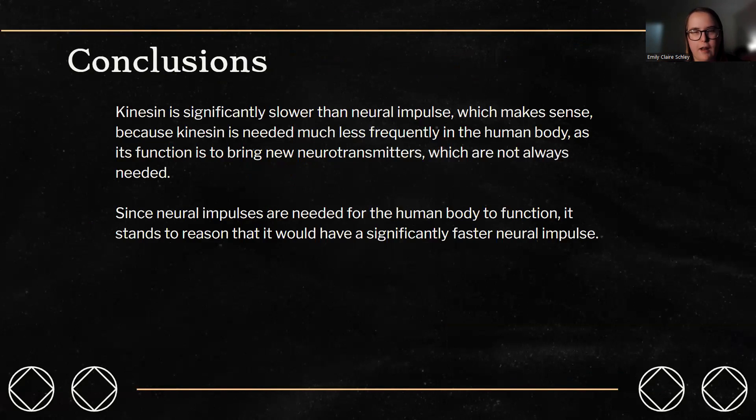So my conclusions that I drew were that kinesin is significantly slower than neural impulses. And this makes sense because kinesin is needed much less frequently. The main lens through which kinesin is looked at is it brings neurotransmitters to neural synapses, but that's not always needed. So it stands to reason that kinesin is a lot slower, because neural impulses, it's what's helping me talk right now. It's what's helping me move my hands as I speak. It's what's helping me move the slides. They're needed so much more frequently that it stands to reason that the velocity of kinesin would be much slower and that of a neural impulse would be much faster.